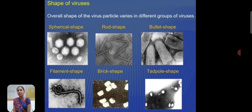There are the virus size and structure, and there are the shapes. Virus particles of different groups have various shapes: spherical shape, rod shape, bullet shape, filamentous, brick-shaped, and tadpole shape.